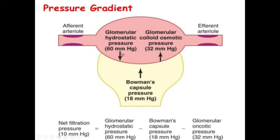The glomerular hydrostatic pressure of 60 mmHg is trying to push the plasma into the Bowman's capsule. Follow the arrow — this arrow means 60 mmHg of hydrostatic pressure pushing plasma into the Bowman's capsule.